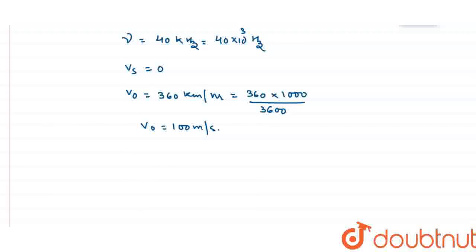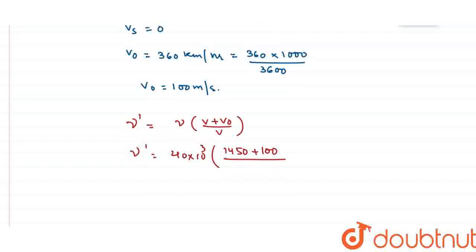Now I am going to use the Doppler effect. According to the Doppler effect, the apparent frequency nu dash equals nu V plus V0 upon V. Because source is stable, Vs is 0. Putting the values: nu dash equals 40 into 10 to the power 3, V is 1450 plus observer 100 meter per second upon 1450. Simplifying this, nu dash is 4.276 into 10 to the power 4 hertz. This is the first case.